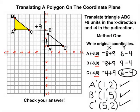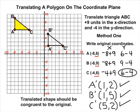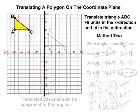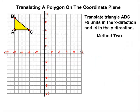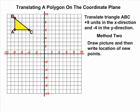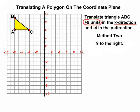Another way to translate triangle ABC on the coordinate plane is to simply put your pencil on any of the three points and then make 9 jumps in the x direction and 4 jumps downwards in the y direction and then plot your new point. For example, if we put our pencil on point B, we can make 9 jumps to the right and 4 jumps down and then record the new location of point B. We can do the same thing for point C and point A.